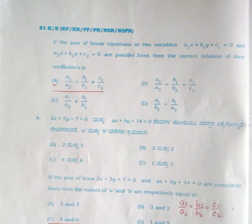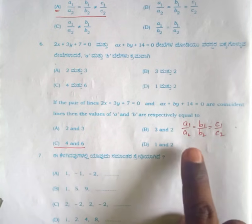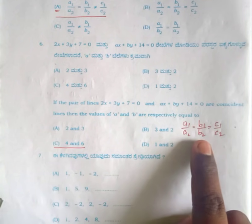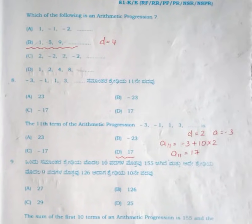For the fifth question, the condition for parallel lines is A1 by A2 equals B1 by B2 not equal to C1 by C2. For the sixth question, the answer is option C, 4 and 6 — it should satisfy A1 by A2 equals B1 by B2 equals C1 by C2. For the seventh question, the answer is option B, because it has a common difference of 4.